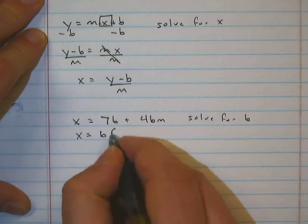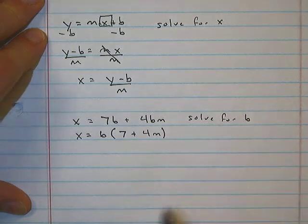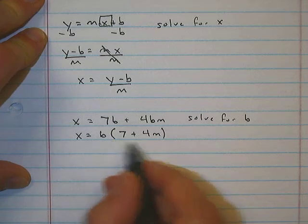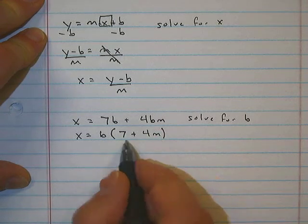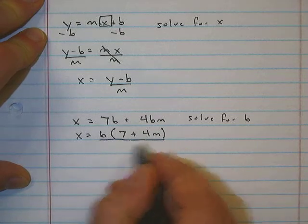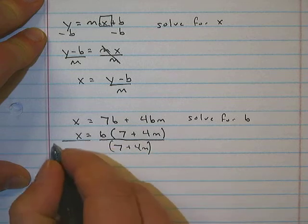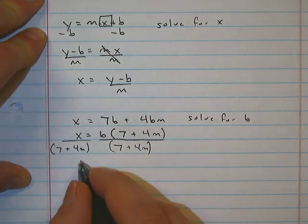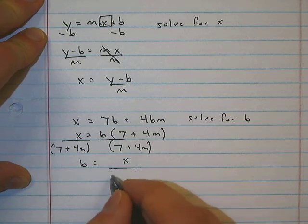The first thing we're going to do is factor out a b from this whole side, so x equals b times 7 plus 4m. Now what we can do to isolate b is divide both sides by the entire set inside the parentheses. So divide by 7 plus 4m on both sides.